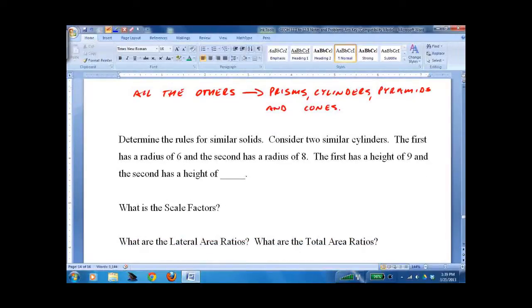So determine the rules for similar solids. You probably guessed if you've done the similar shapes with area ratio and scale factor. But let's do it. Two similar cylinders. First has a radius of 6, second has a radius of 8. First has a height of 9, second has a height of, well I'm going to say they're similar. So 6 over 8 equals 9 over x.